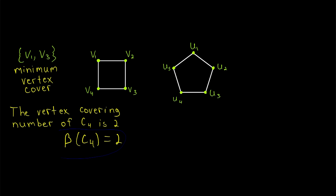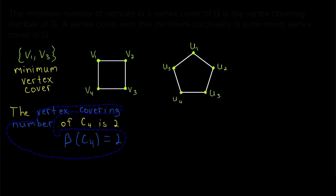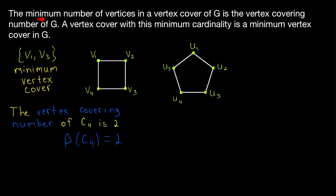Here we see that the vertex covering number of C4 is 2 because its minimum vertex covers have two vertices. This notation is not universal, but it's used in my favorite graph theory textbook. Beta of a graph is used to denote the vertex covering number, so beta of C4 equals 2. The minimum number of vertices in a vertex cover of a graph is the vertex covering number of the graph, and a vertex cover with this minimum cardinality is called a minimum vertex cover. This is a minimum vertex cover with two vertices — that's the minimum needed to cover this graph — and so its vertex covering number, denoted beta of the graph, is equal to 2.